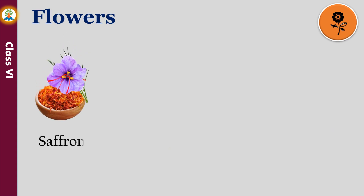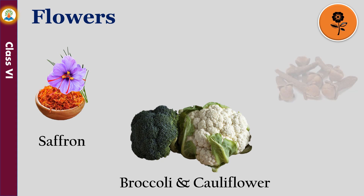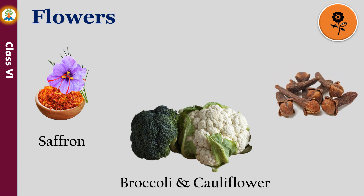Saffron, or kesar, is obtained from the flowers of the plant Crocus sativus. Broccoli and cauliflower are also flowers of plants that we eat. Clove is a flower bud that is dried and used as a spice in some dishes.